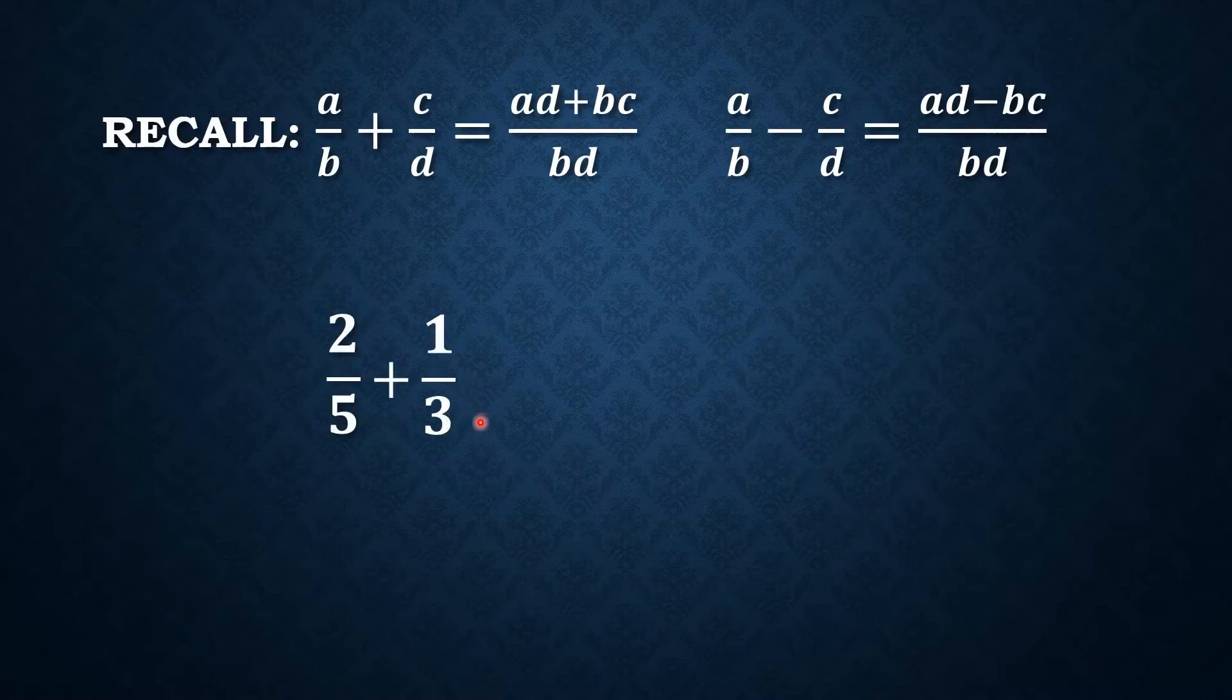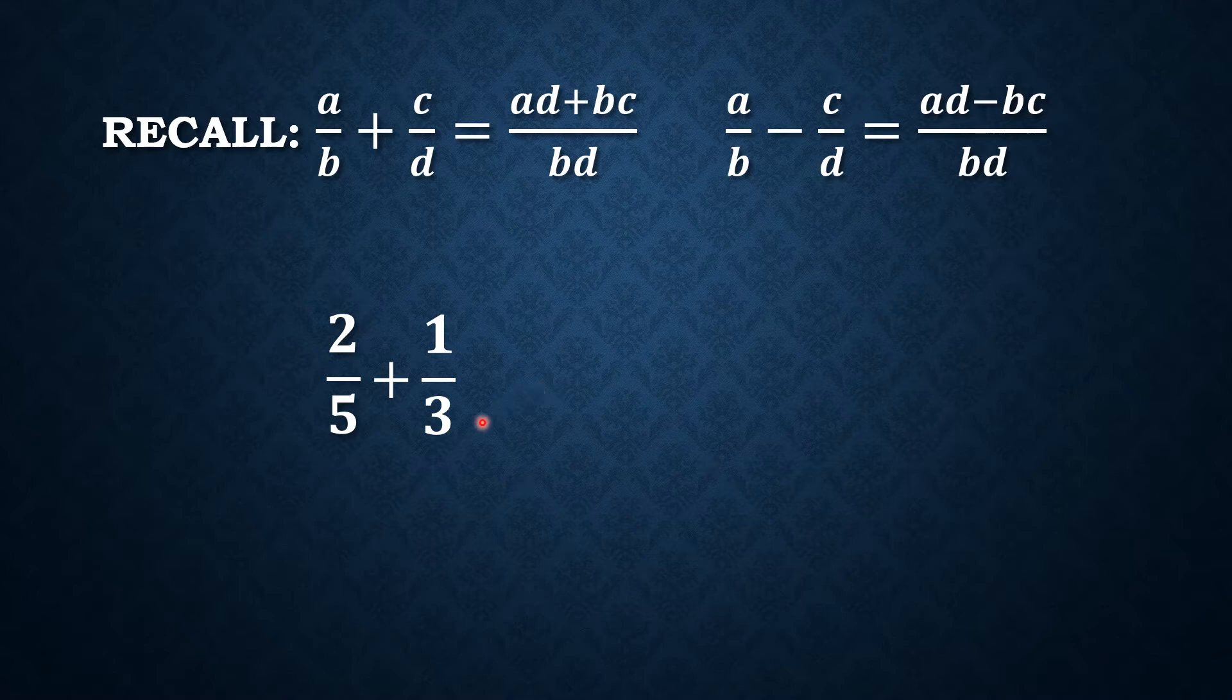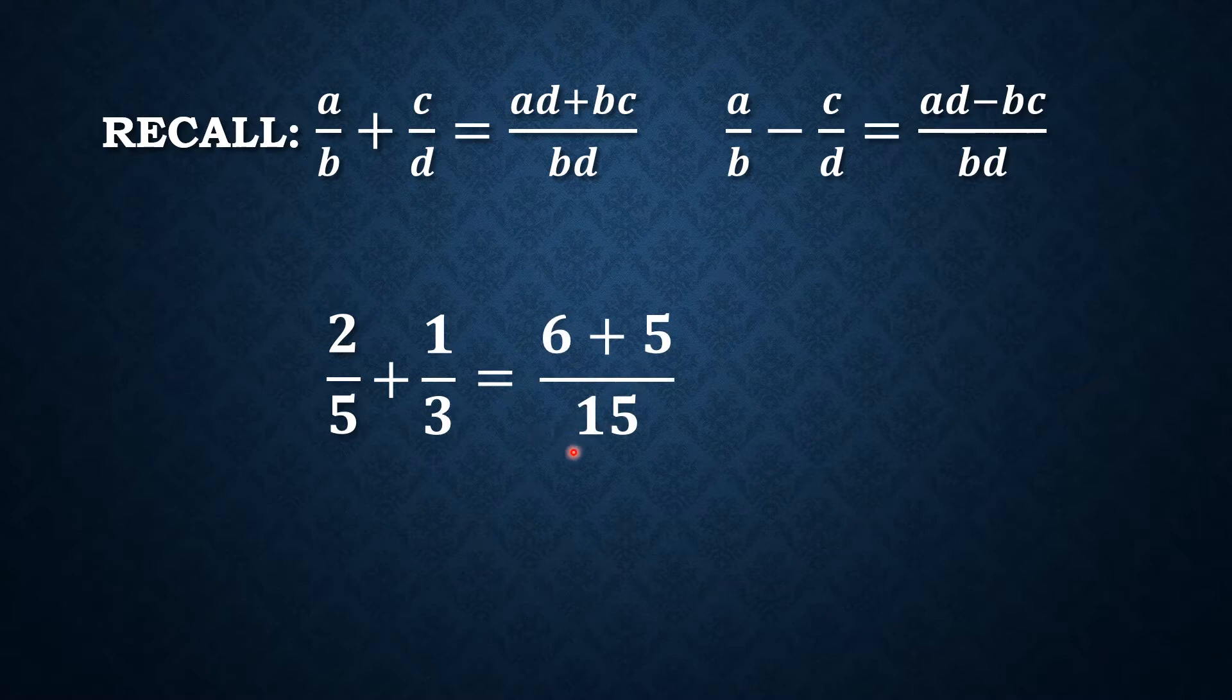Recall that in fractions, when you add or subtract two dissimilar fractions, the first thing that we have to do is to find their LCD. For example, 2 over 5 plus 1 over 3. So in this case, our LCD is 15.